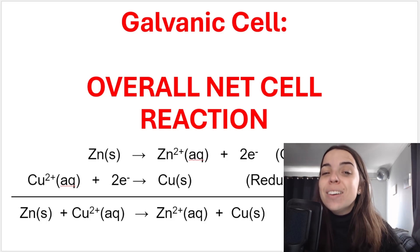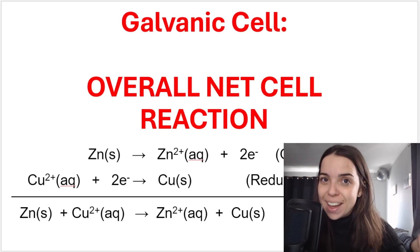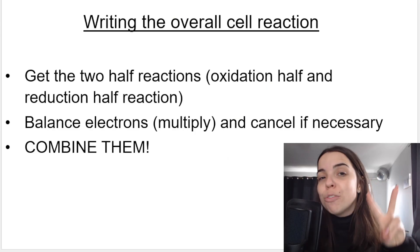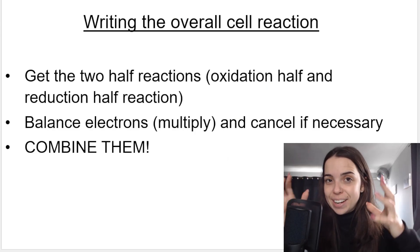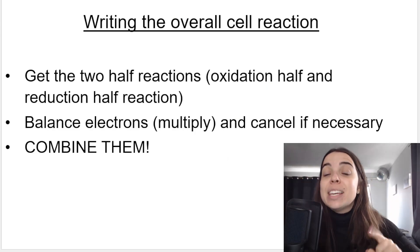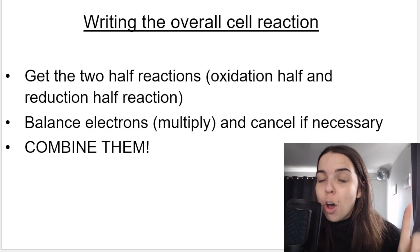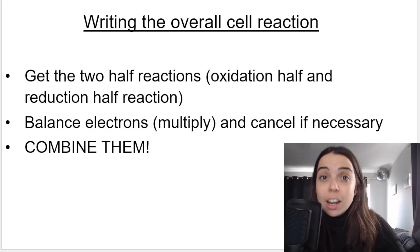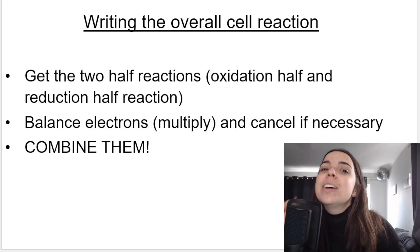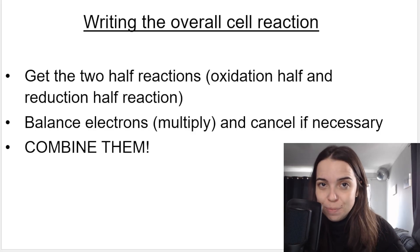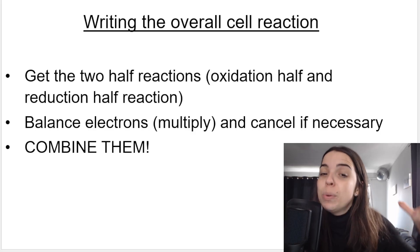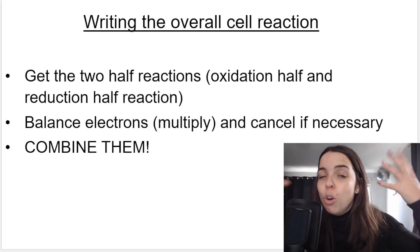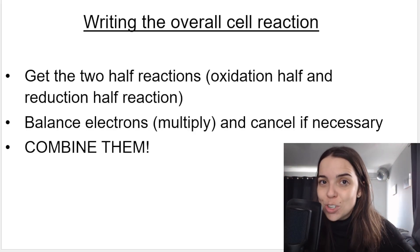How do you get the overall or net cell reaction for a galvanic cell? You first need to remember that there are two half reactions taking place within a galvanic cell: the oxidation half reaction taking place in the anode half cell, and the reduction half reaction that takes place in the cathode half cell. These are called half reactions, and we need to combine them to give us the overall or net cell reaction.